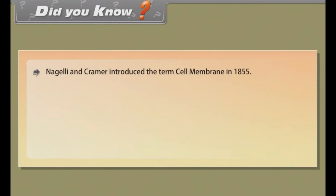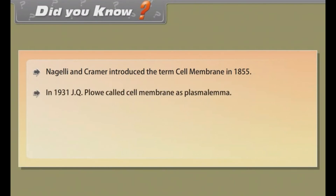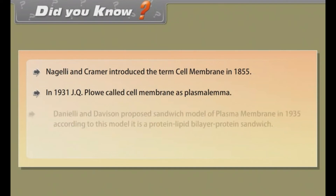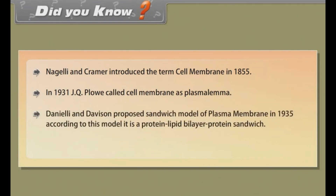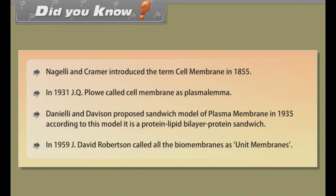Did you know? Nageli and Cramer introduced the term 'cell membrane' in 1855. In 1931, J.Q. Plowe called the cell membrane 'plasmalemma.' Danielli and Davson proposed the sandwich model of plasma membrane in 1935; according to this model, it is a protein-lipid bilayer-protein sandwich. In 1959, J. David Robertson called all biomembranes 'unit membranes.'